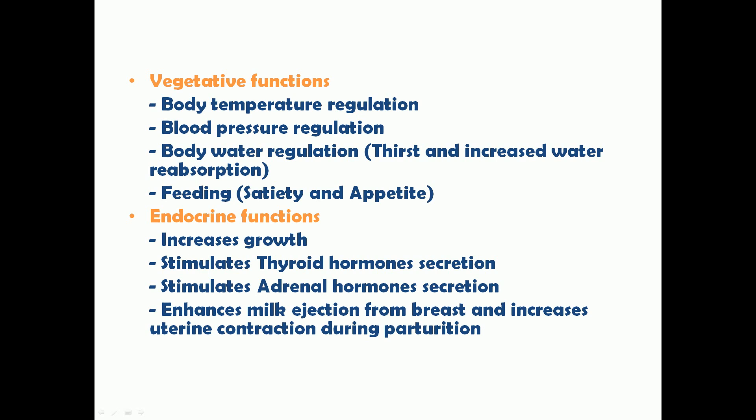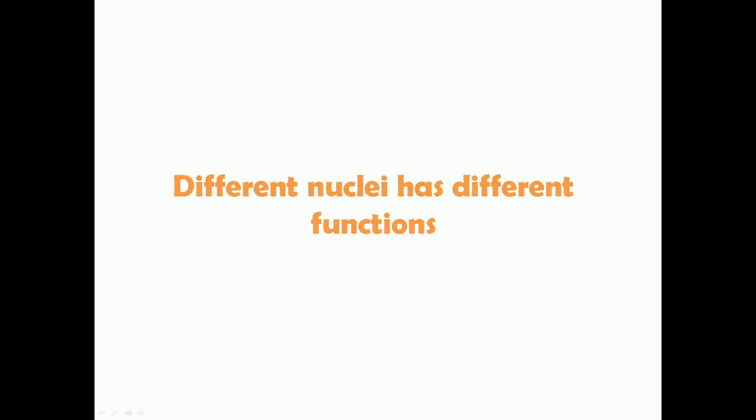The endocrine functions of the hypothalamus include stimulating growth, stimulating thyroid hormone secretion, stimulating adrenal hormone secretion, enhancing milk ejection from the breast during lactation, and increasing uterine contraction during parturition. There are different nuclei in the hypothalamus and each nucleus has different functions.